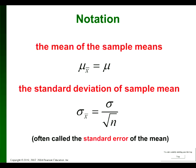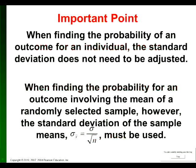When finding the probability of an outcome for an individual, we use normal CDF. Type in left score, right score, mean, standard deviation. That's what we did last night, and we didn't adjust the standard deviation — if the standard deviation was 15, that's the last number you put into normal CDF. That's for the probability of an outcome for an individual.